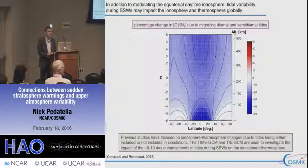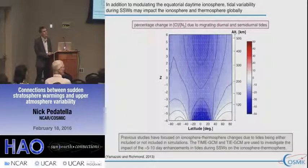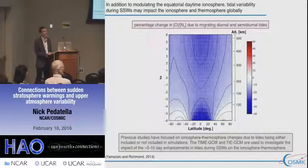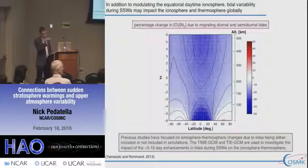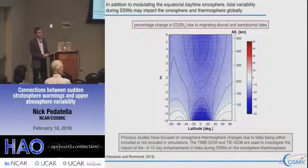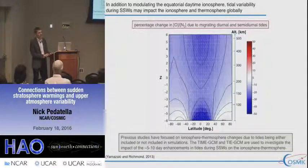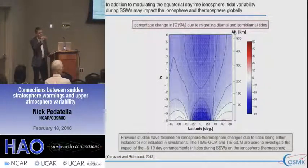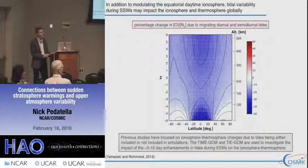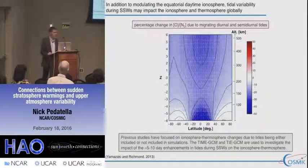Any other questions? One more question: in the comparison between the model and observations of drift or electron density, the model's EIA structure seemed to have a very narrow latitudinal extent while the observations have a much wider distance. Is that specific to the SSW or a general feature of TIME-GCM? I think that is a general feature — the model anomalies tend to be too narrow compared to the observations. Let's thank Nick again. Thank you very much.